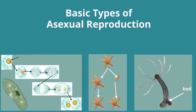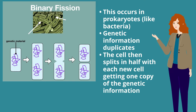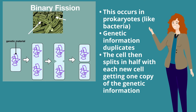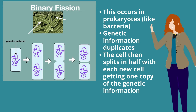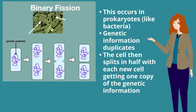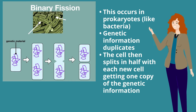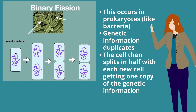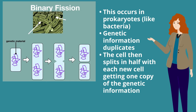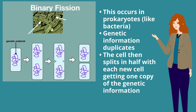The basic types of asexual reproduction: Binary fission occurs in prokaryotes like bacteria. Genetic information duplicates, and the cell then splits in half with each new cell getting one copy of the genetic information.